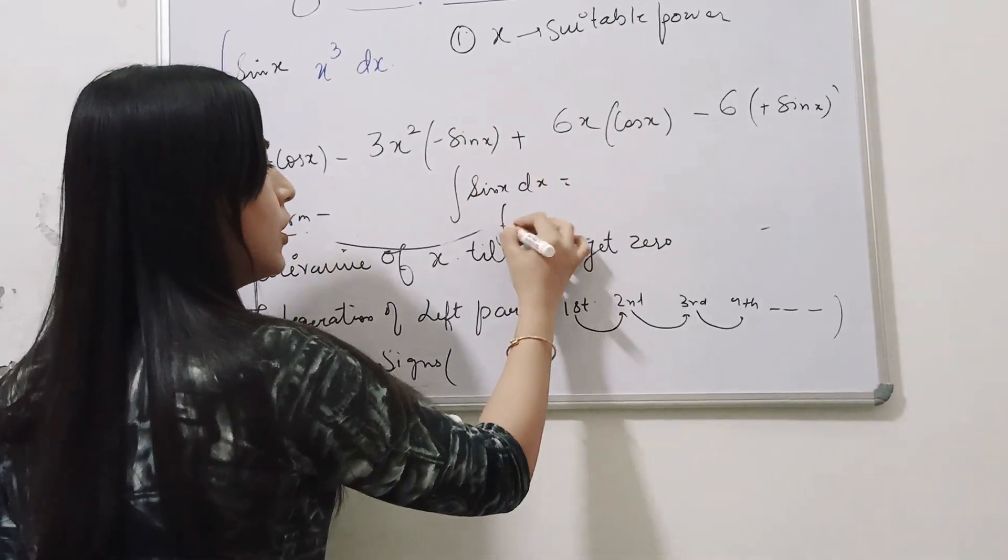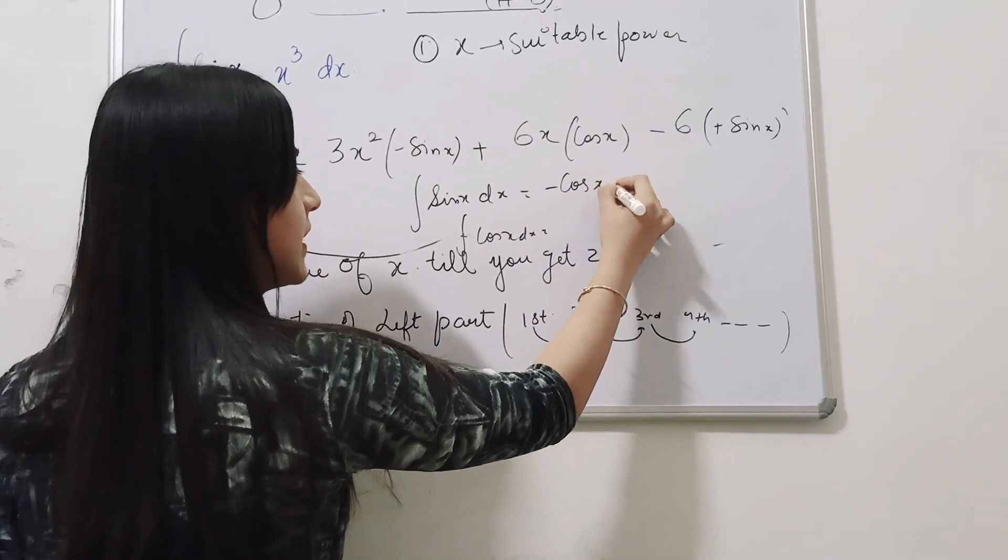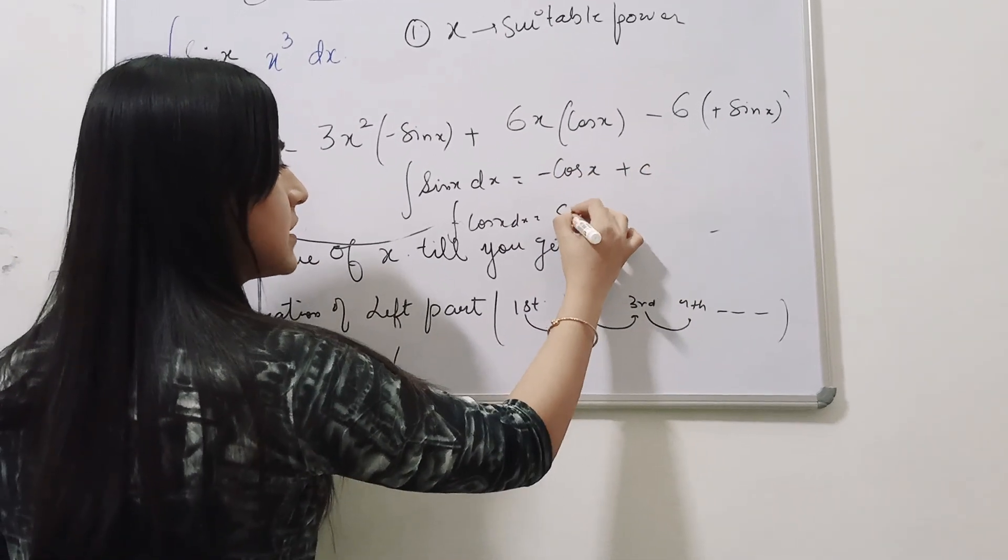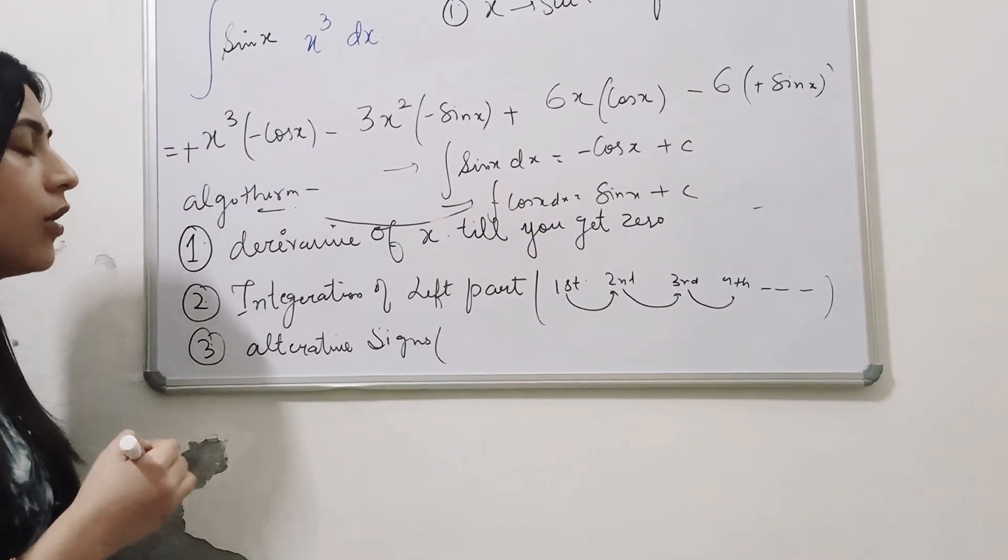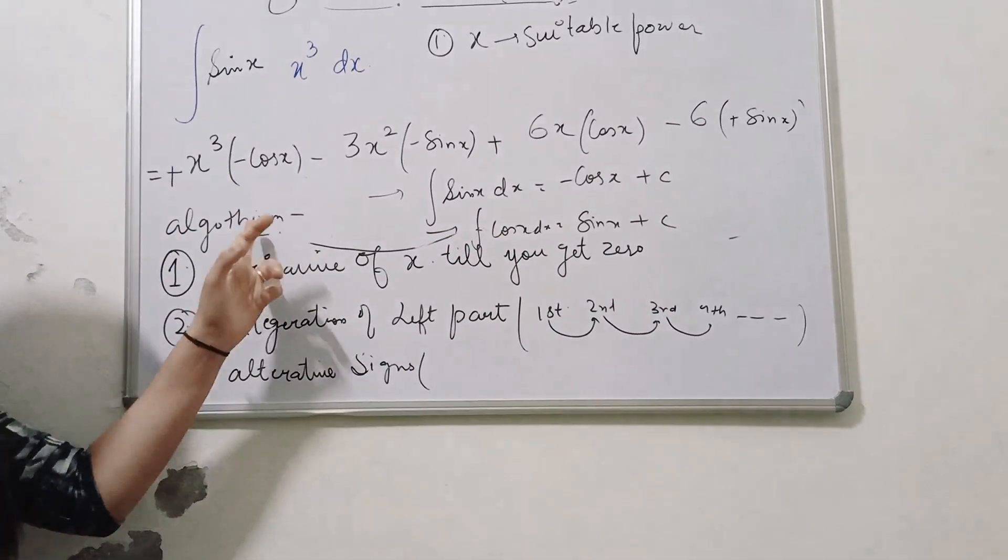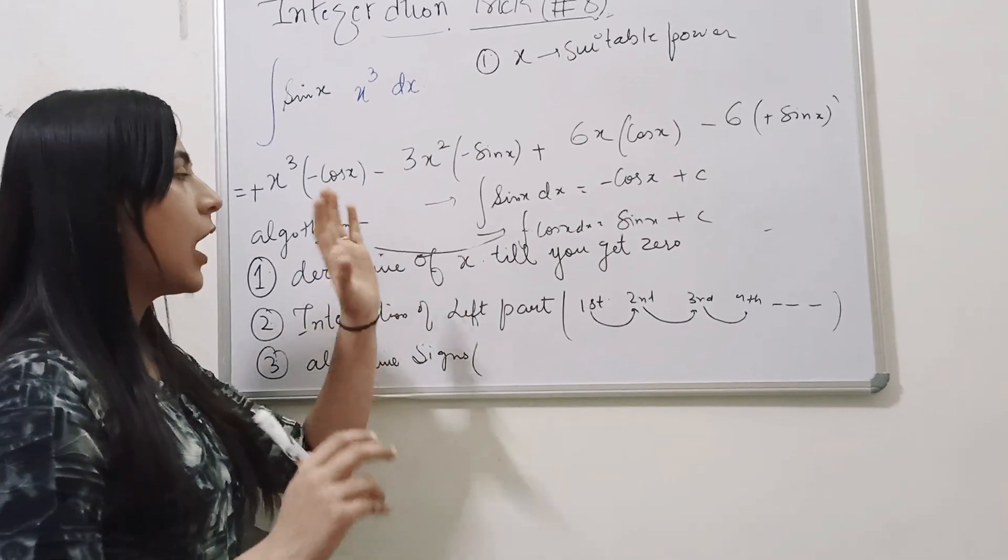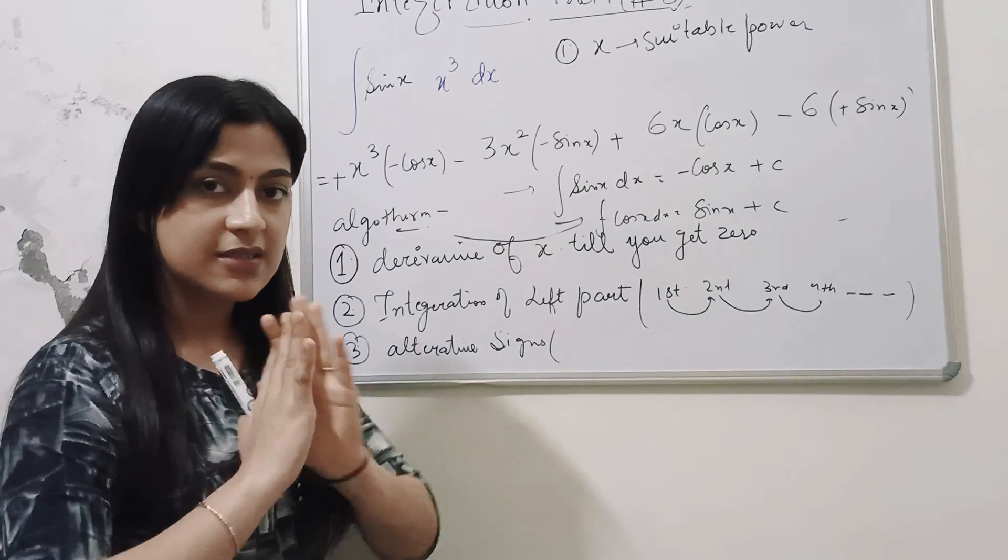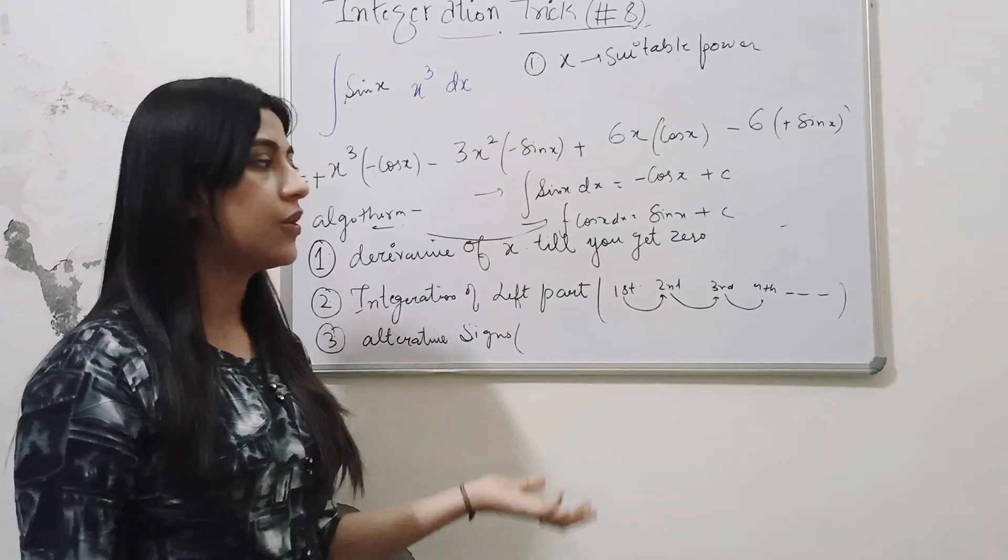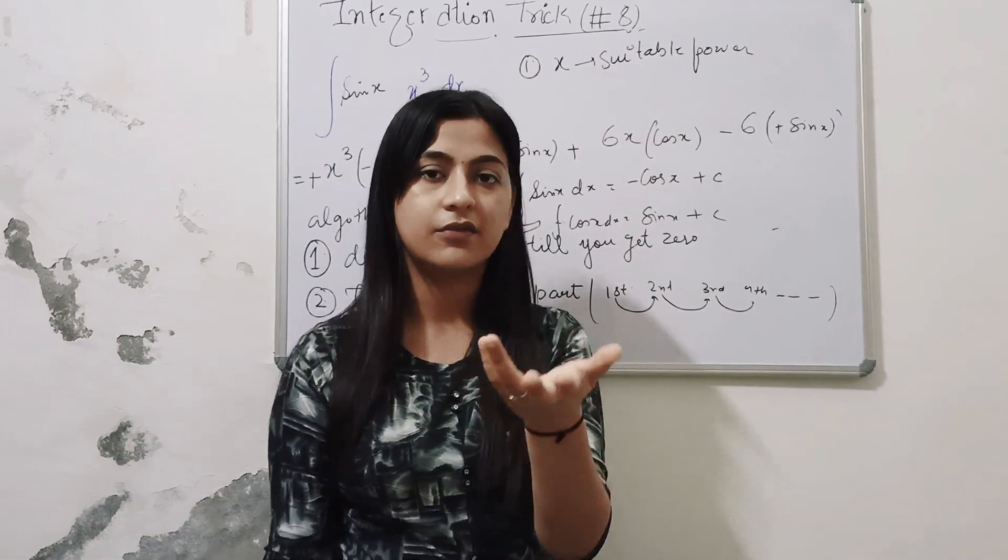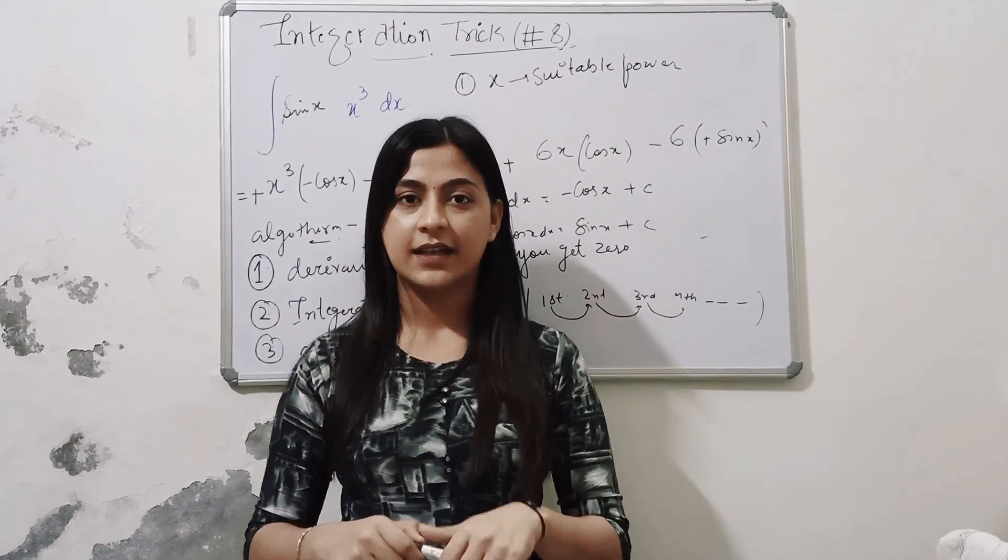Sin x integration is always equal to minus of cos x plus c and it is equal to sin x plus c, so this you have to remember, obviously we have done before. So this is the algorithm, in this way, you can just use the trick, aapko integration by parts karne ki zaroorat nahi hai, isko use karo, is trick ko, that's it, your question is solved in less than 1 minute. Thank you so much, we will meet tomorrow in the next trick, bye-bye.